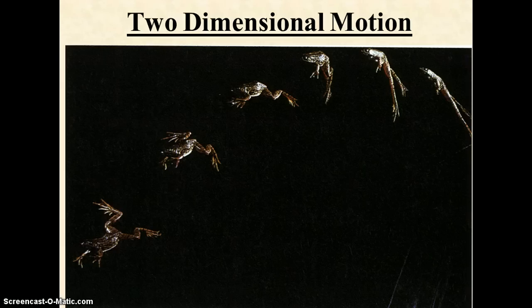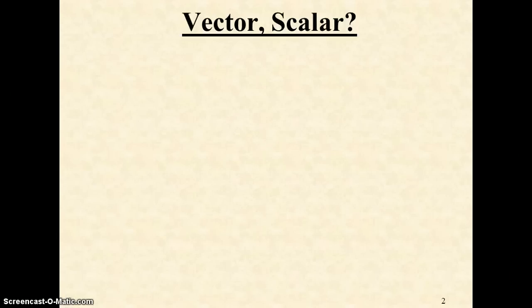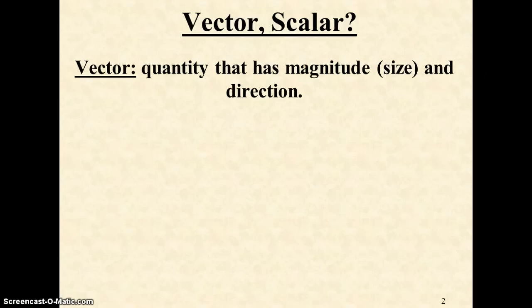This is what you were investigating in the video activity last week. I want to quickly go over vector versus scalar once again. Remember, a vector is a quantity that has both size and direction. It can be denoted by an arrow. Notice the red here is velocity, 10 meters per second towards the east. This is an acceleration vector, specifically the acceleration due to gravity, 9.8 meters per second squared down.